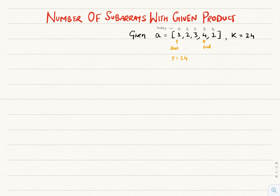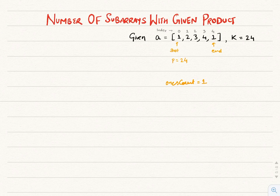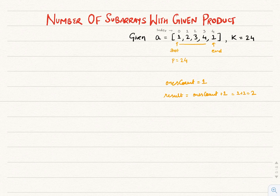One interesting case to handle is when 1 is followed by the end pointer of a sliding window, because 1 won't change the product but will change the count of subarrays. So as soon as p becomes equal to k, I'm going to stop incrementing end and check whether the current position of end is followed by a series of ones in the array. If yes, those ones will contribute to the subarray count. I'll store the count of succeeding ones in a variable ones_count, incrementing ones_count and the end pointer while end points to 1. ones_count becomes 1 and end increments. I'll store ones_count + 1 in result, which becomes 2. The +1 accounts for the subarray found without succeeding ones, from index 0 to index 3. So result = 2 holds the count of subarrays from 0 to 3 and from 0 to 4.